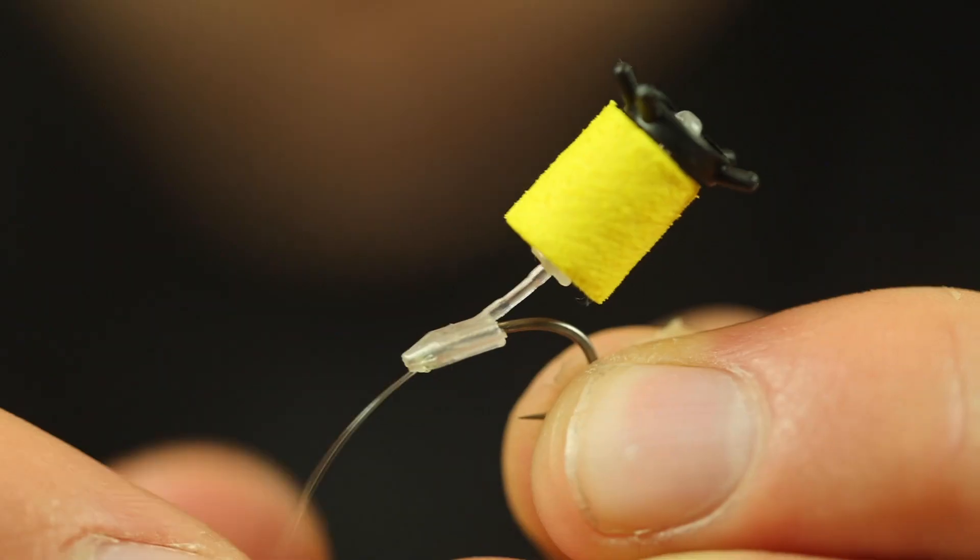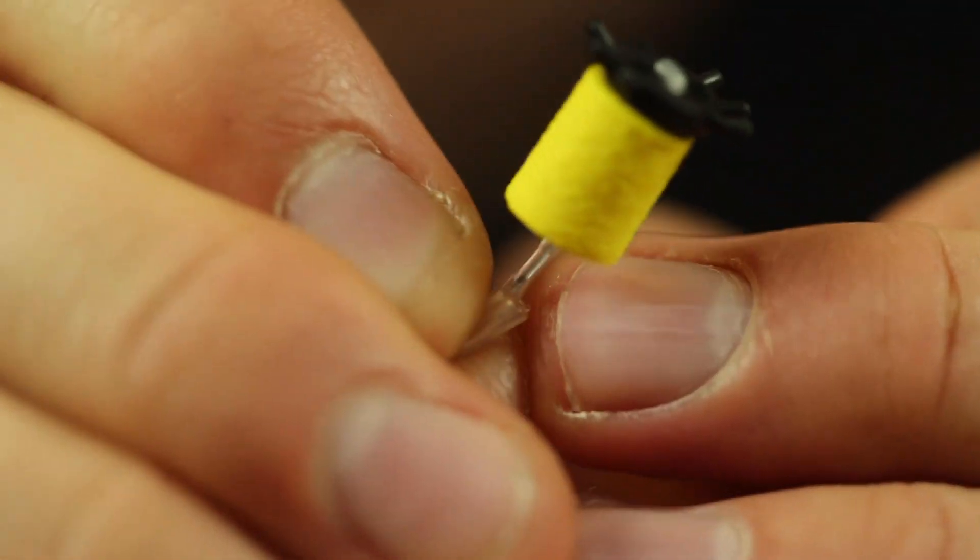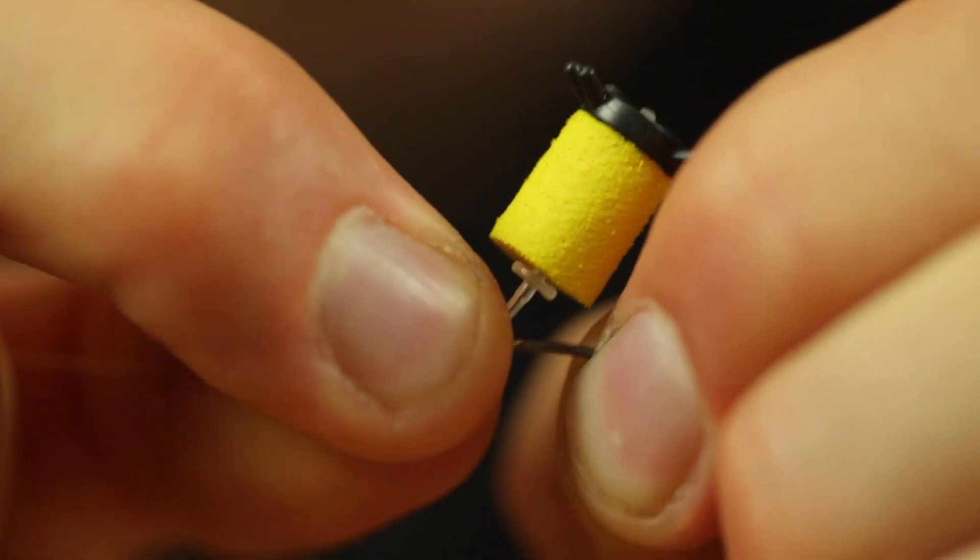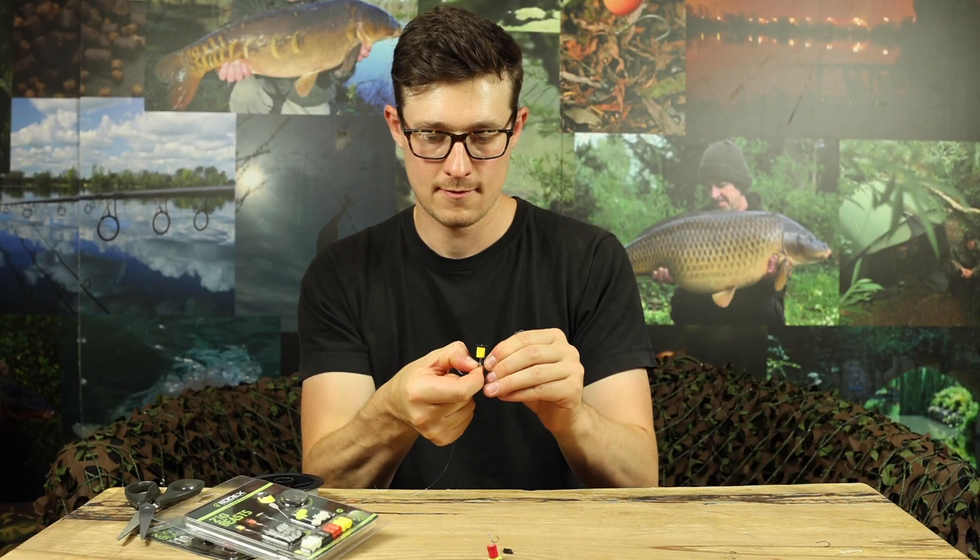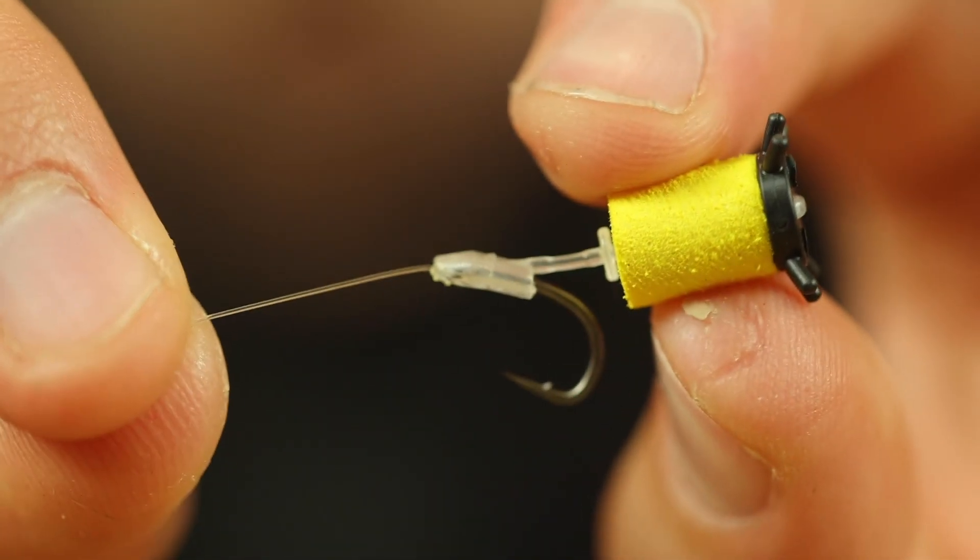Now say I had a different hook bait so I've caught a fish on this one and the hook's been blunted, I can simply slide that off the line then I've got another hook here which I tied on earlier, just take the whole stem, slide it onto the new hook link. Straight away we're good to go.